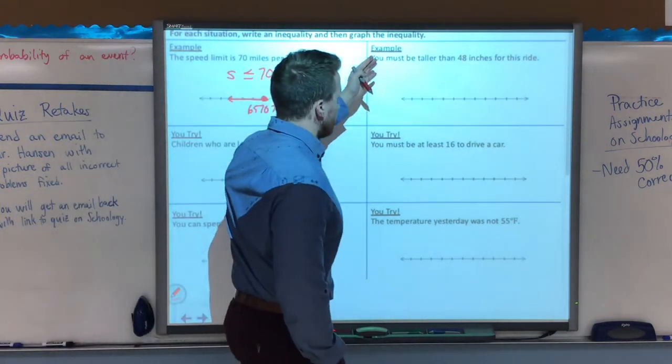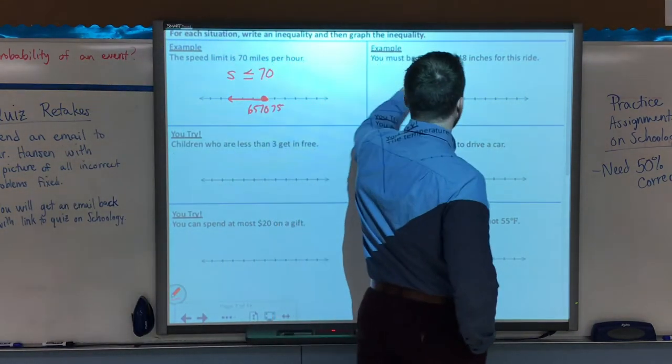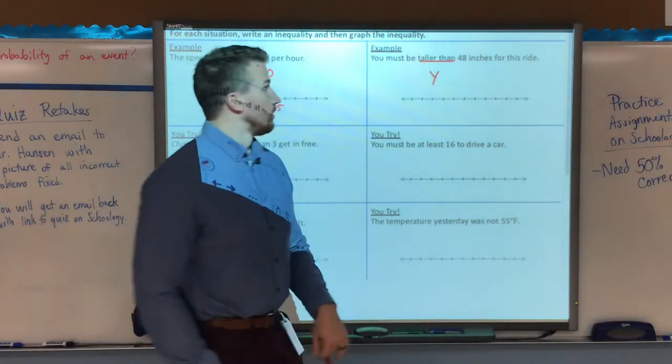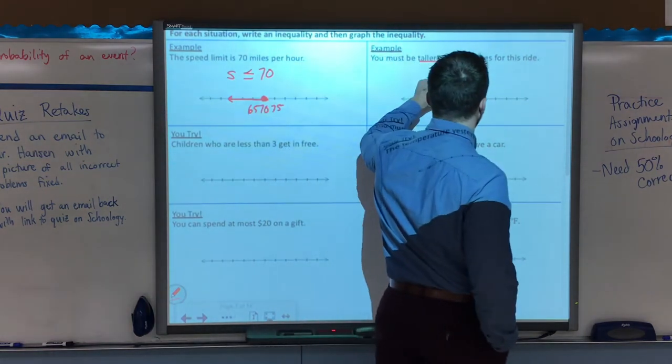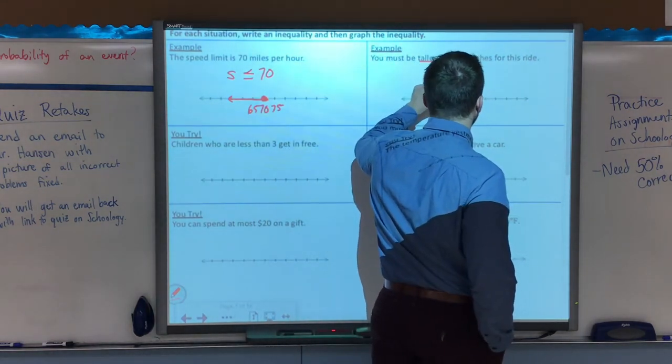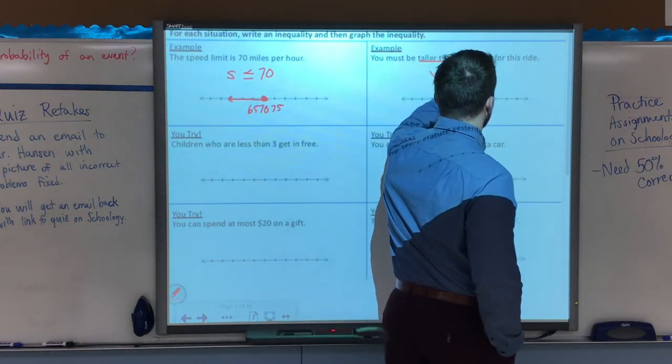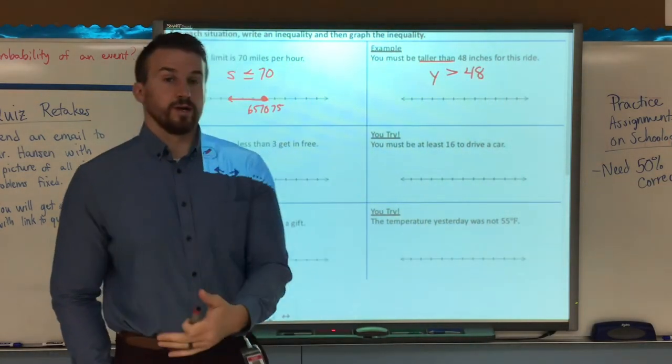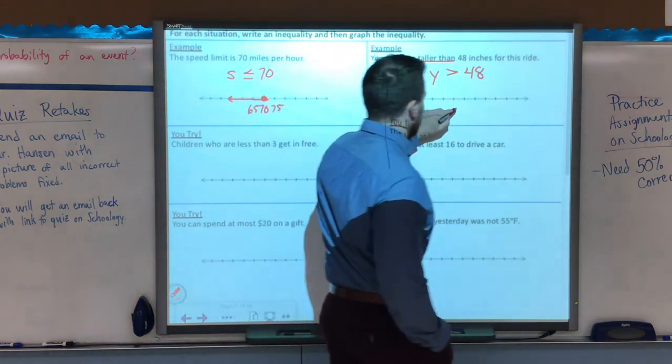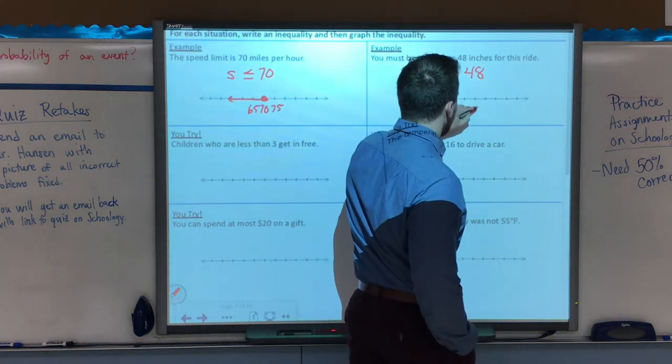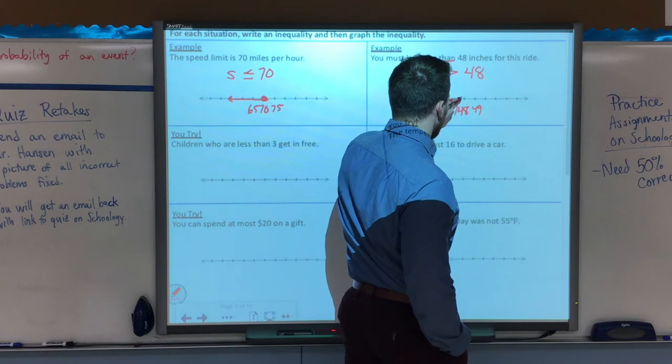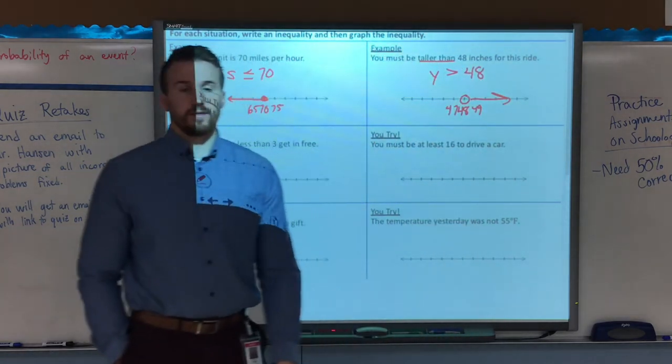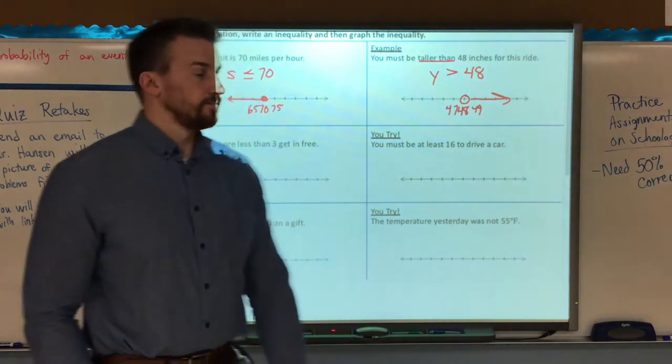Second example, you must be taller than 48 inches for the ride. So y is going to be the person you. Taller than means it has to be greater than 48 inches, because it says taller than 48 inches, which means it has to be bigger or greater than 48. So here's 48 in the middle, I put 49, on that side 47. It's an open circle, and it's anything greater than 48, which is to the right.